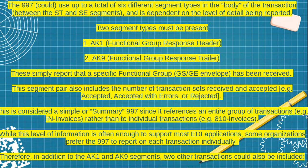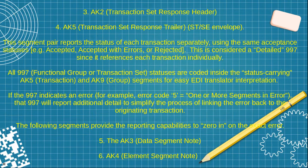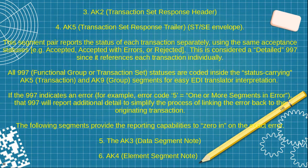Some organizations prefer the 997 to report on each transaction individually. Therefore, in addition to AK1 and AK9, two other segments can also be included between them: AK2 and AK5. AK2 is the transaction set response header and AK5 is the transaction set response trailer. These segments report the status of each transaction separately using the same acceptance status — accepted, accepted with error, or rejected. This is considered a detailed 997 since it references each transaction individually.